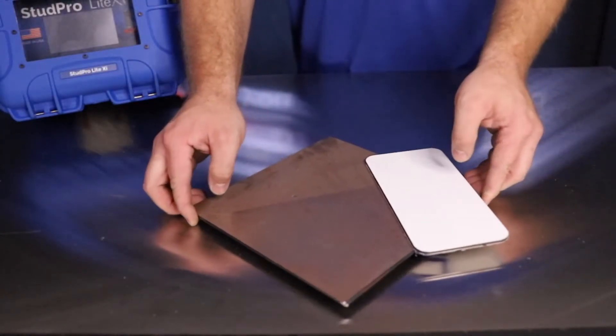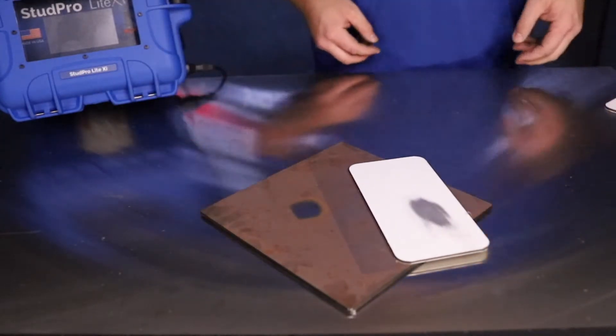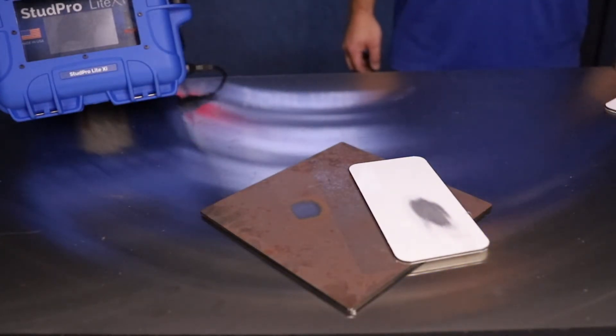Proper surface prep is essential to getting good, consistent welds. Be sure to sand or grind rusty or painted surfaces so you are welding onto clean, shiny metal.